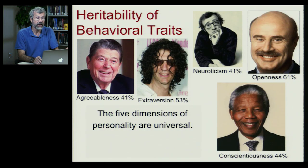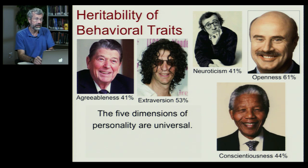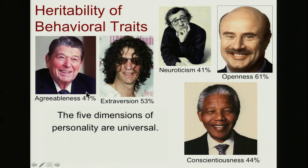Some surprising heritable traits have to do with personality. Psychologists consider personality to consist of five different dimensions: agreeableness, extroversion, neuroticism, openness, and conscientiousness. All five of these have a heritability of between 40 and 60%, so all five dimensions of our personalities do have a genetic component.